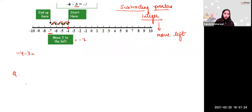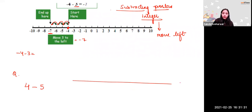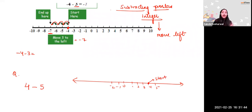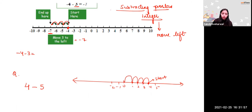Another example: 4 minus 5. Draw a number line. Start at 4. You are subtracting a positive integer, so move left 5 steps — one, two, three, four, five. You reach negative 1. That's your answer.